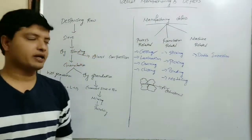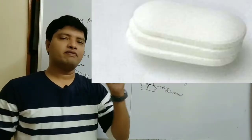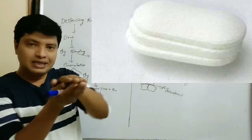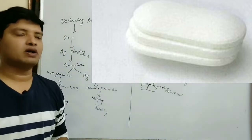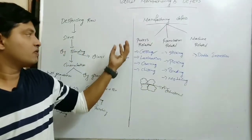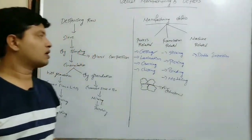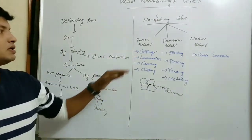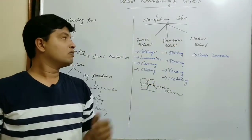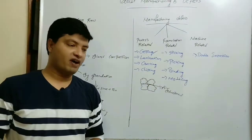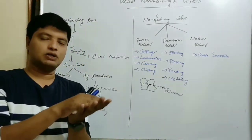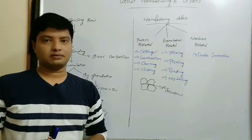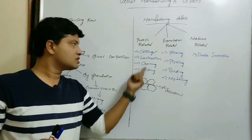Next we have lamination. What is lamination? The tablet will segregate into more than two or three distinct layers. In capping, the tablet separates into only two layers; here we have more than two layers, and we call it lamination. The same three categories apply: process related, formulation related, and machine related. Process related: if the granules are not dried properly, we get a lamination problem.